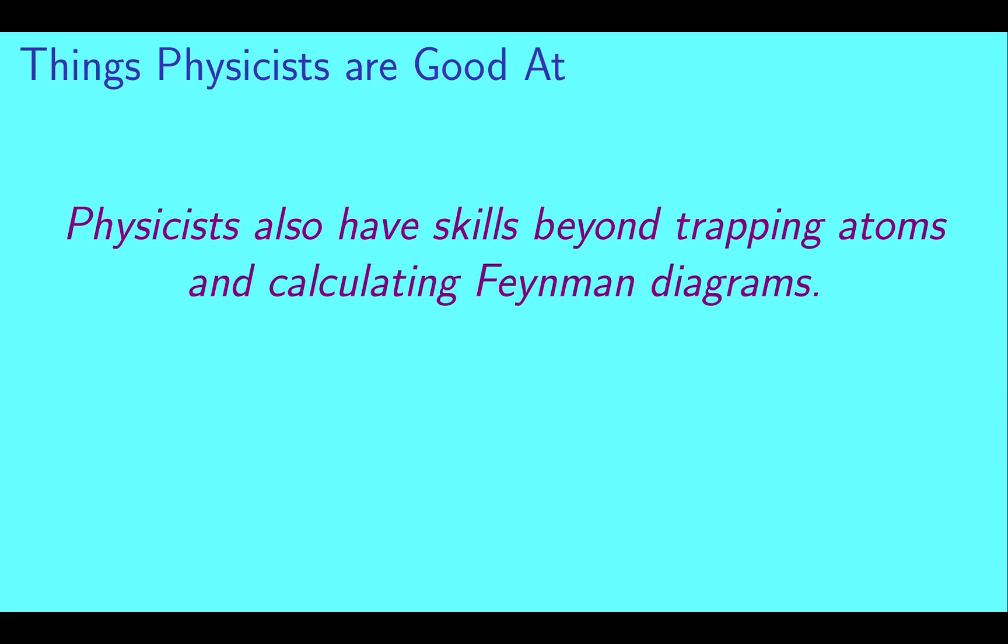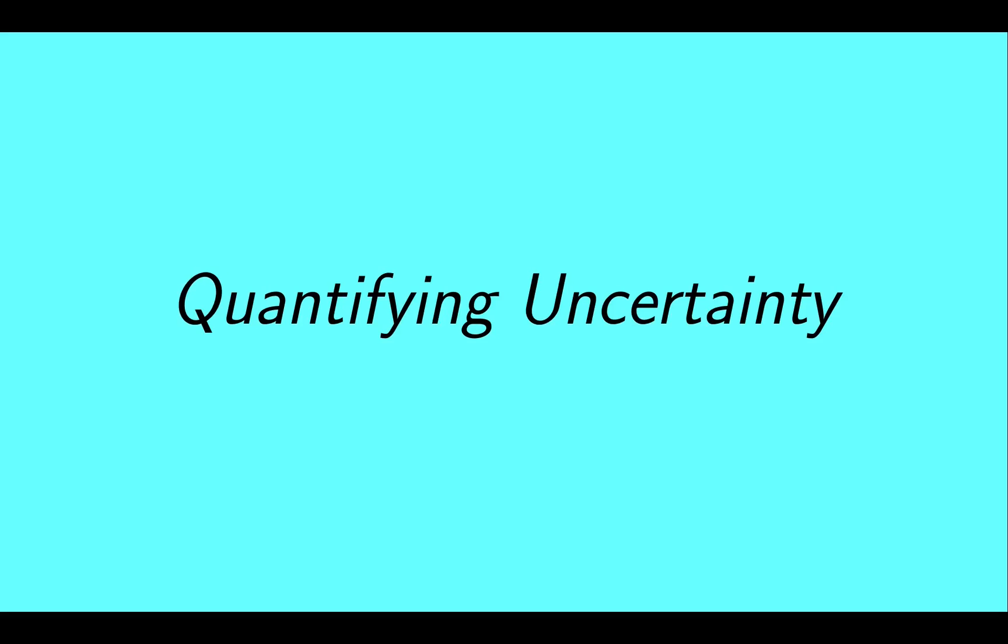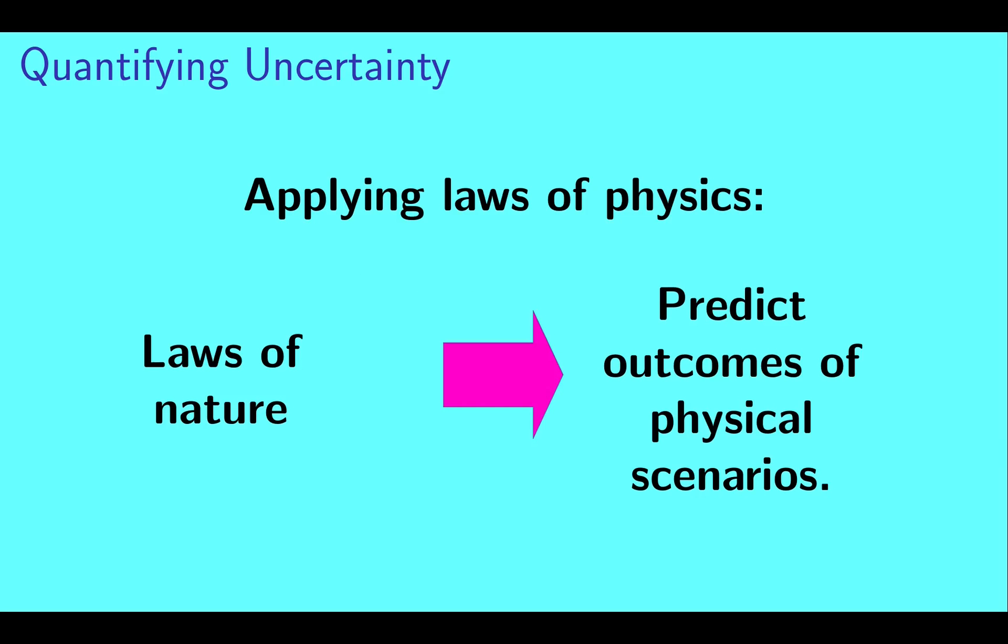But physicists have skills beyond trapping atoms and calculating Feynman diagrams. I'm going to focus on two of these: quantifying uncertainty and making useful approximations. Let's start with quantifying uncertainty. When one thinks of using physics knowledge, they might think of applying the laws of nature to predict what will happen in certain physical scenarios.